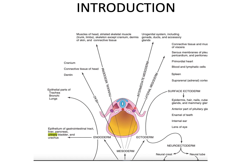We want to concentrate on this portion of the intraembryonic mesoderm. Remember, the intraembryonic mesoderm gives rise from medial to lateral: paraxial mesoderm, intermediate mesoderm, and then lateral plate mesoderm. It is the intermediate mesoderm that gives rise to the urogenital system, including the gonads, ducts, and accessory glands, and anything related to the kidney.